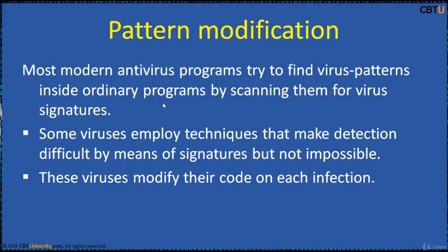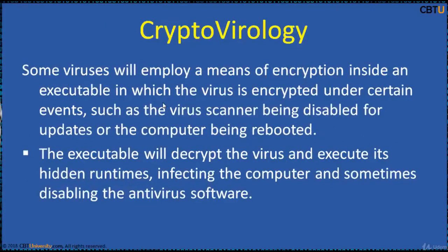These viruses modify their code on each infection — that is, each infected file contains a different variant of the same virus. Some viruses employ encryption inside an executable, where the virus is encrypted under certain events, such as the virus scanner being disabled for updates or the computer being rebooted. The executable will decrypt the virus and execute its hidden run tags, infecting the computer and sometimes disabling the anti-virus software. This is called cryptovirology.